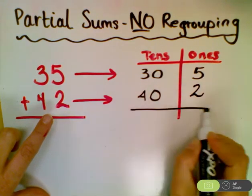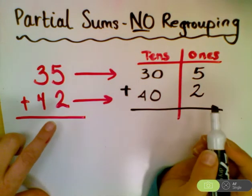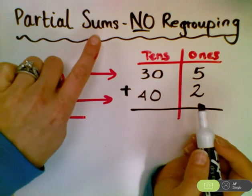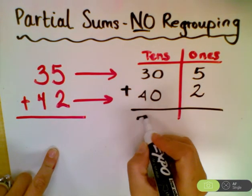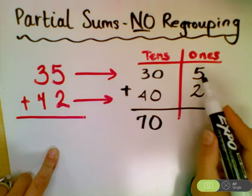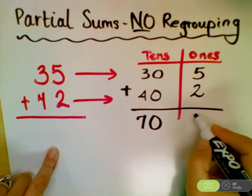And we draw our equal sign. And now, since we're doing partial sums, sums means add. So 30 plus 40 equals 70, and 5 plus 2 equals 7.